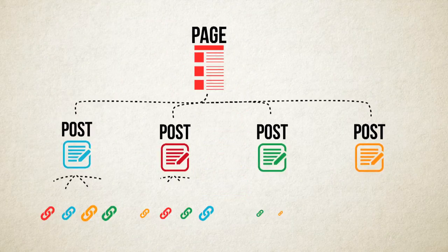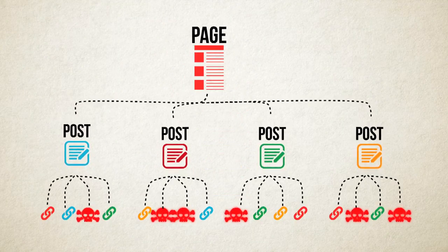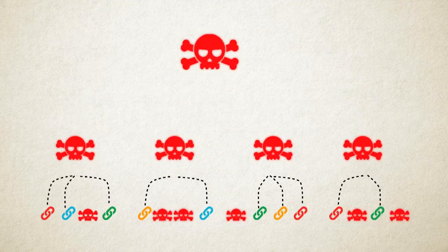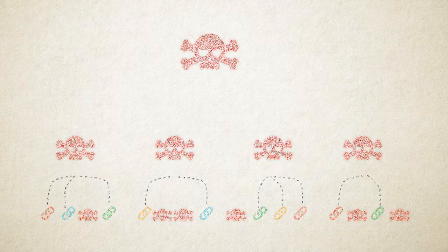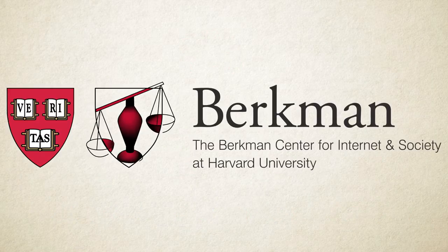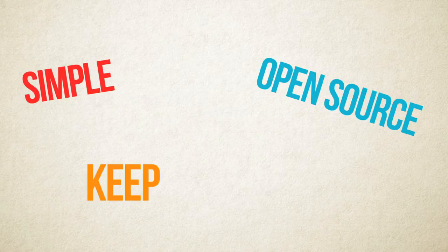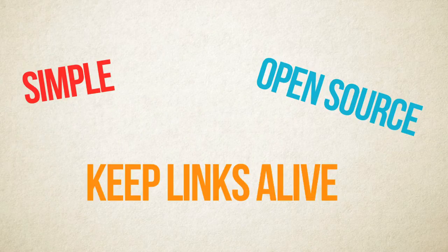All it takes is a few dead links to undermine your entire site. Some developers at the Berkman Center for Internet and Society at Harvard thought that kind of sucked. So they created a simple open source tool for blogs and websites to keep all links alive. It's called Amber.